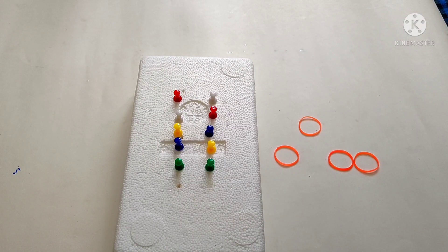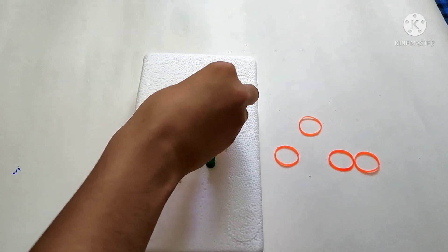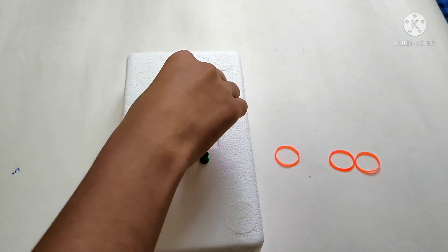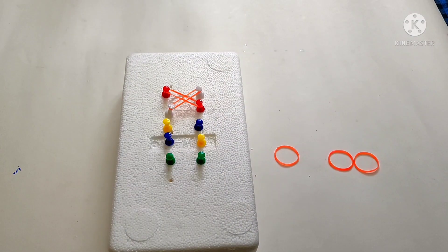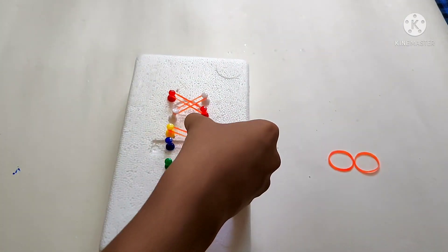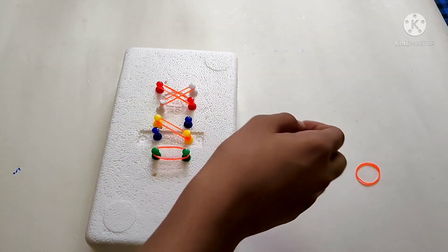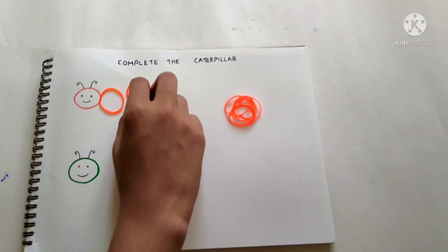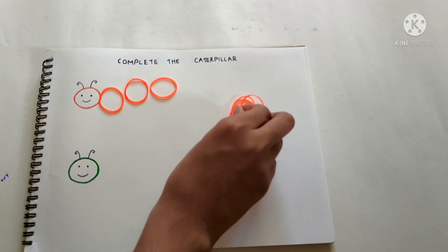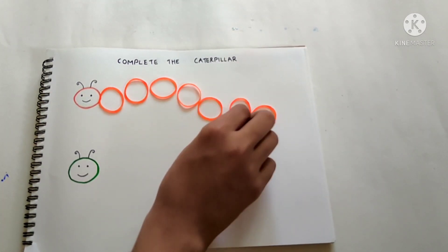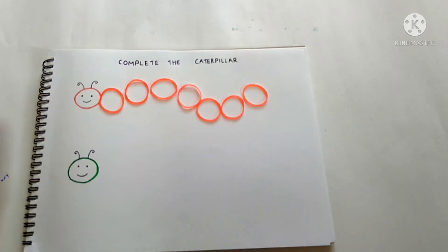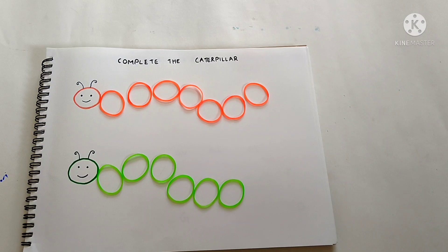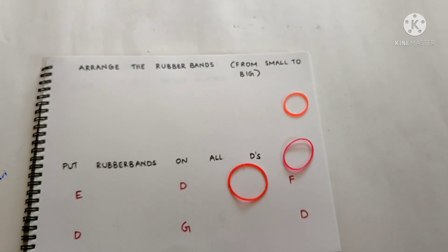Match the same coloured pens using rubber bands. Complete the caterpillar. Arrange the rubber bands from small to big.